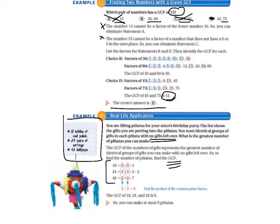So, what you would do is you would make factor trees for each of these numbers. The book cut to the chase, and they went ahead and gave you the prime factorization for each of these numbers. So the prime factorization for 18 is 2 times 3 times 3. You can check that by multiplying 2 times 3 is 6, times 3 is 18. And the prime factorization for 24 is 2 times 3 times 2 times 2. And 42 is 2 times 3 times 7.